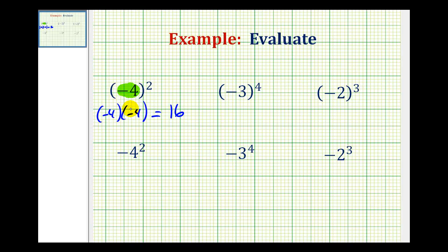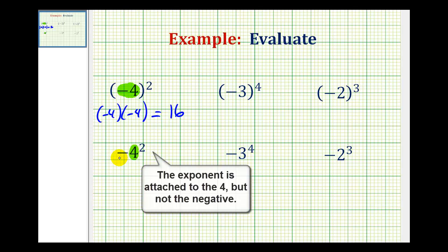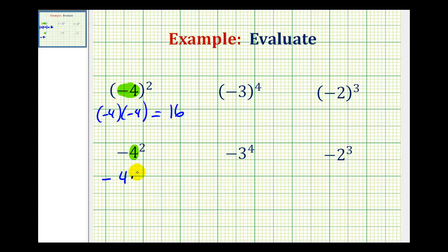But in this example here, the base is actually positive four. So it's probably better instead of saying negative four squared, we say the opposite of positive four squared. So if we expand this, it would be the opposite of positive four times positive four, which is equal to negative 16. So notice how we have opposite signs when evaluating these two expressions.